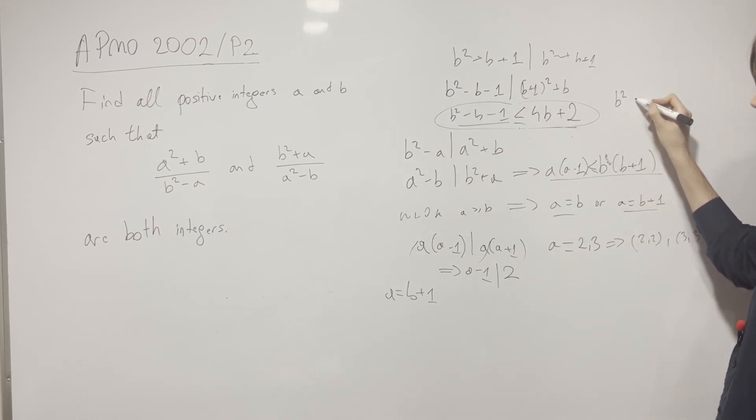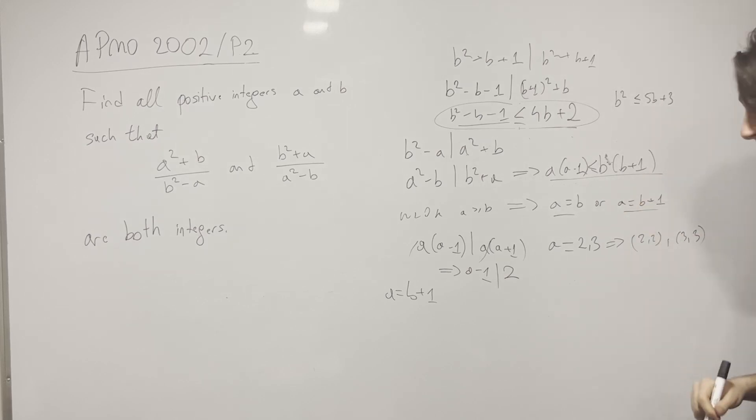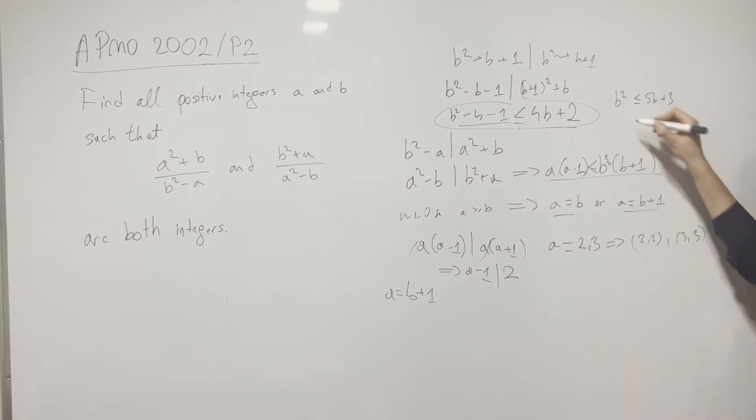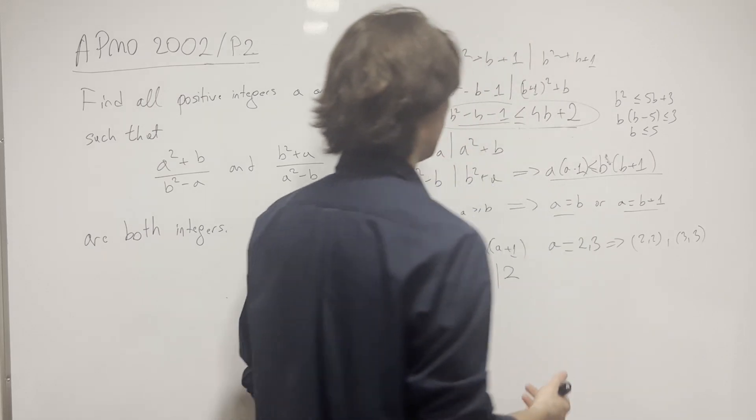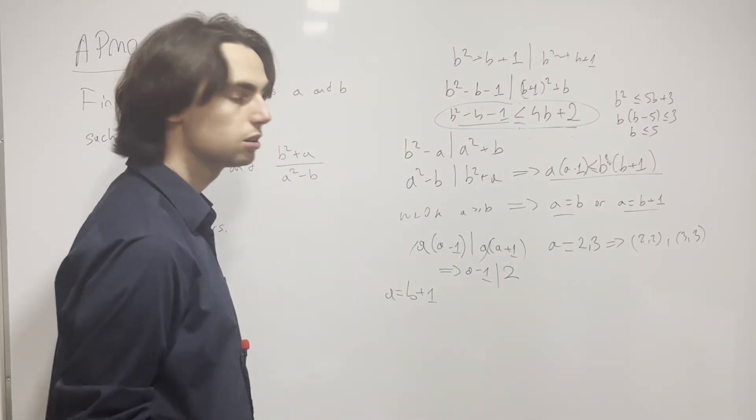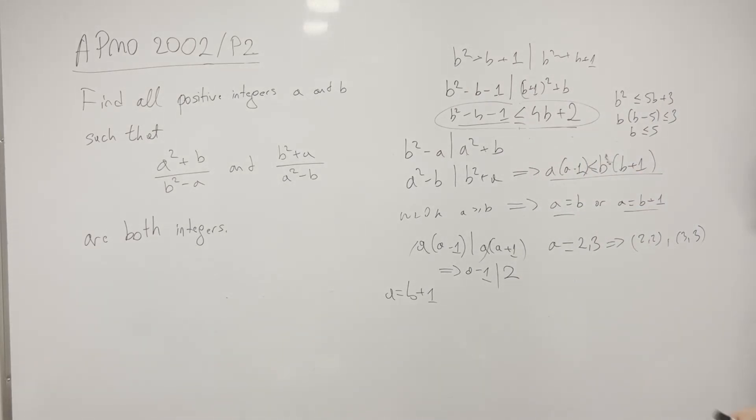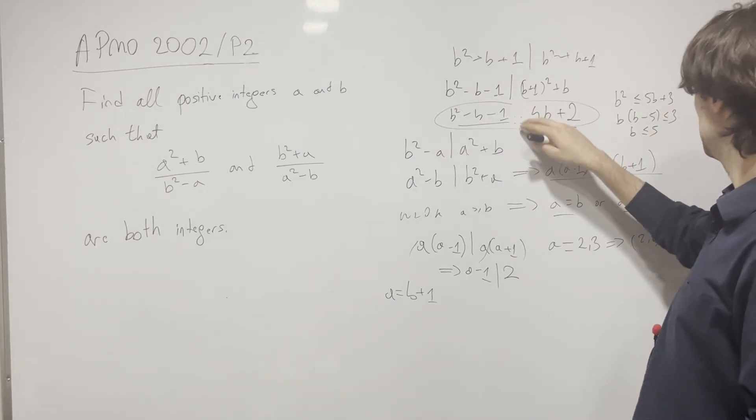With that, we need b² to be less than or equal to 5b + 3. Now the question is, how can we factor this nicely to get rid of a lot of cases? Well, we can say it's like b(b - 5) needs to be less than or equal to 3, which means that b needs to be less than or equal to 5. And now we can literally just check every single one of those cases: b equals 1, 2, 3, 4, 5.